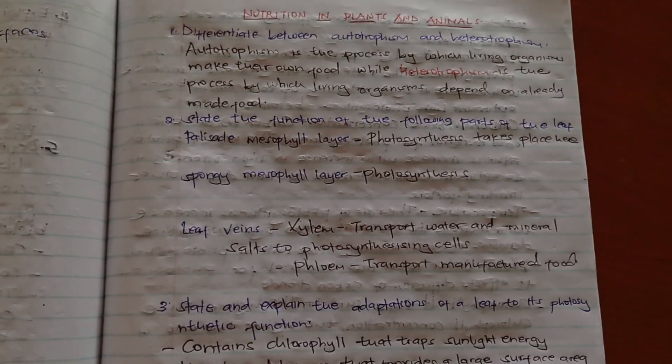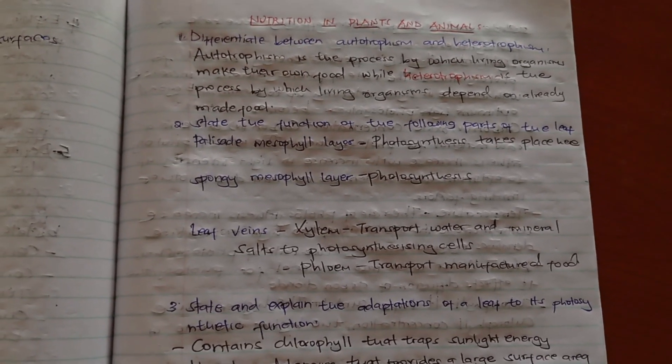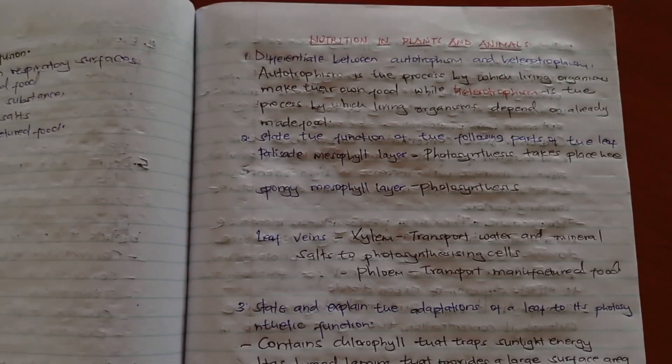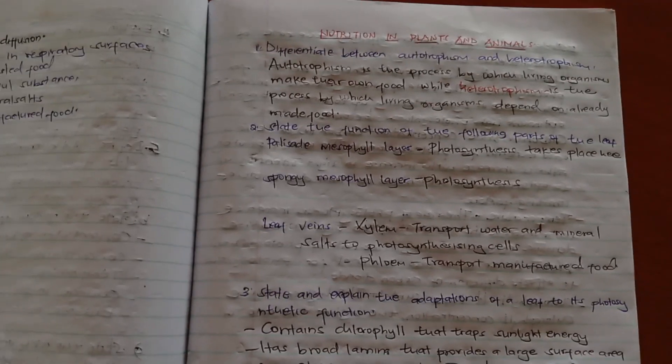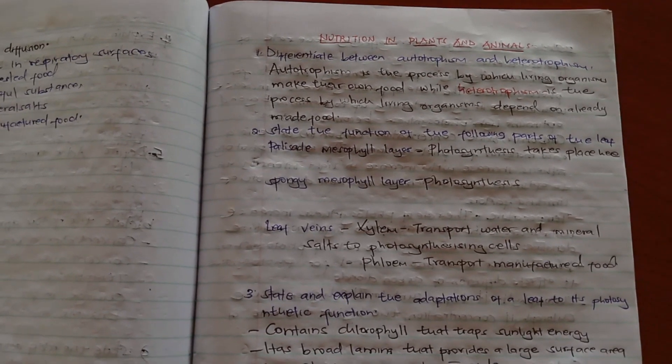State the function of the following: palisade mesophyll, that is where photosynthesis takes place, and spongy mesophyll, that's where photosynthesis takes place too, but they have spaces. Leaf veins, we have xylem and phloem that transport water and mineral salts, and phloem for transport of manufactured food.